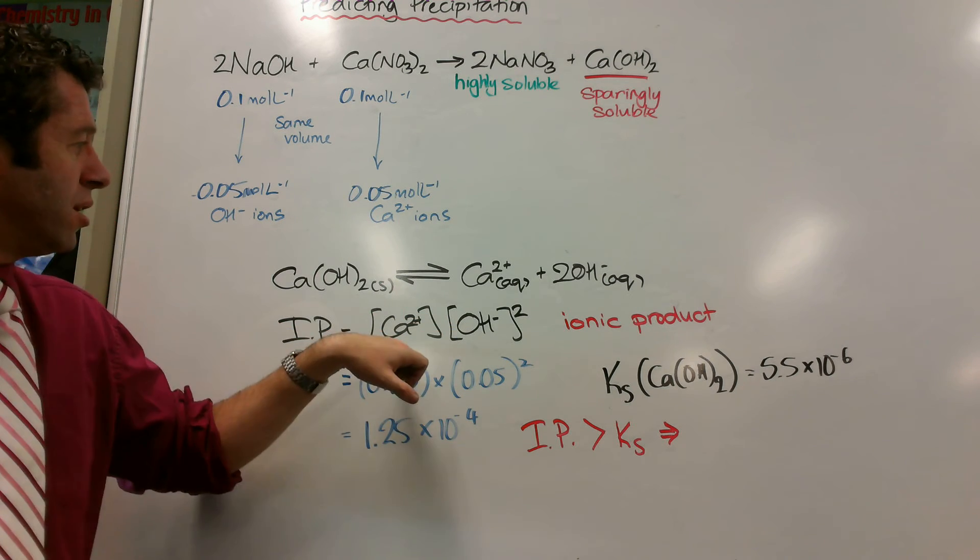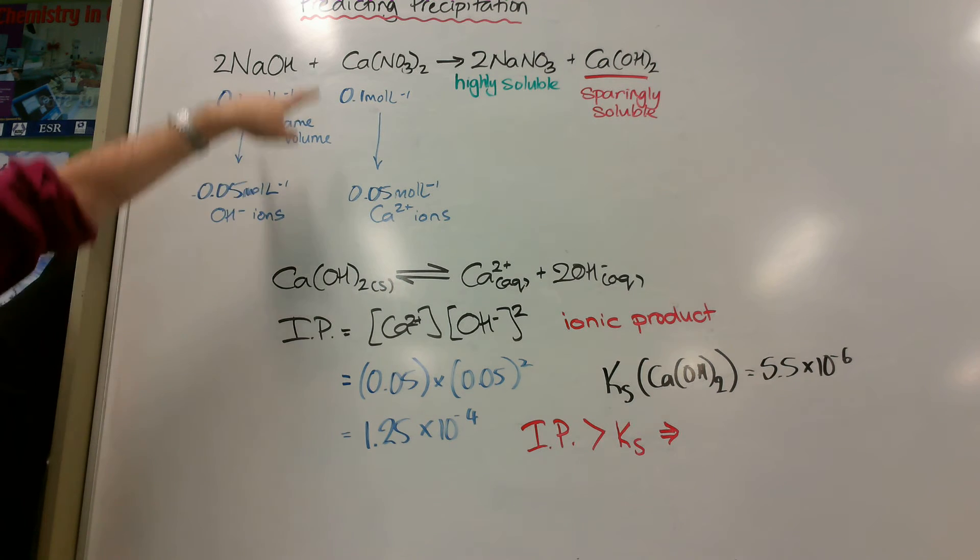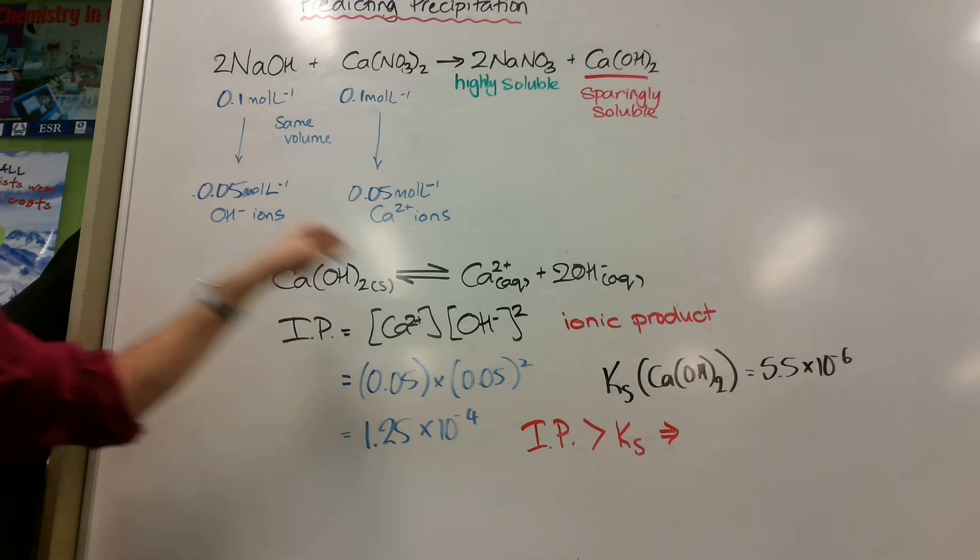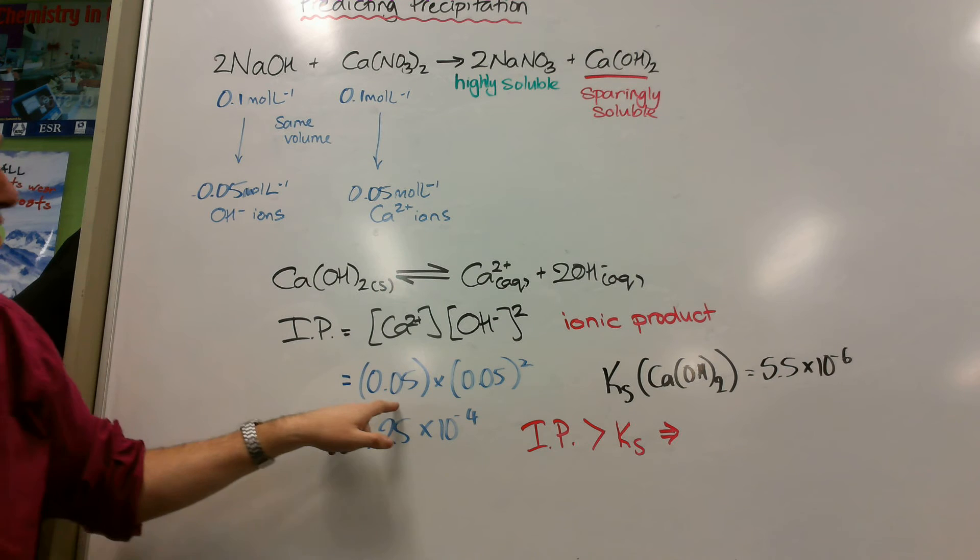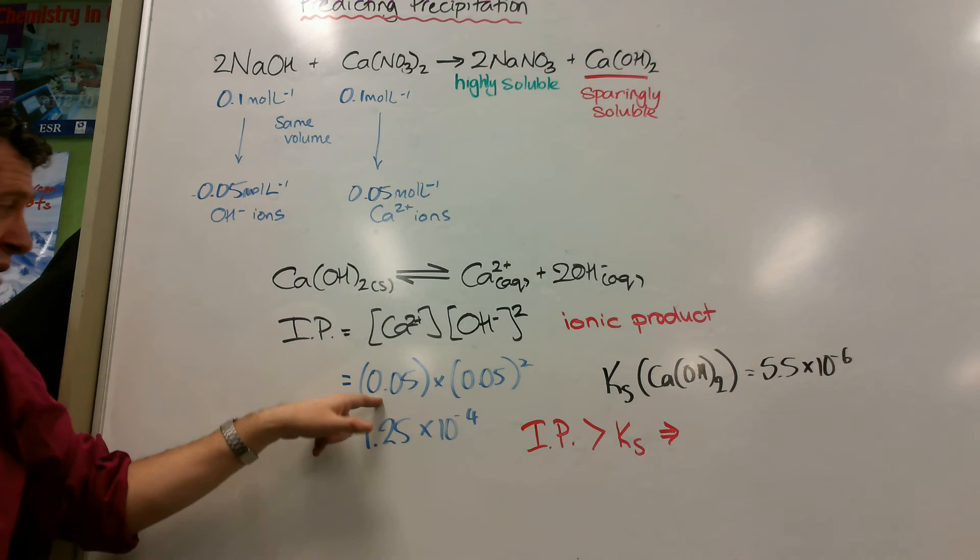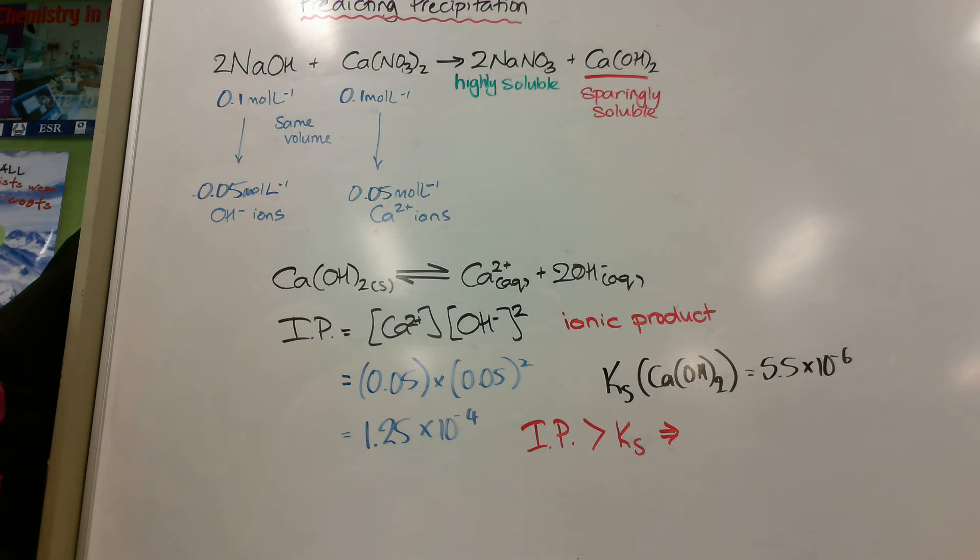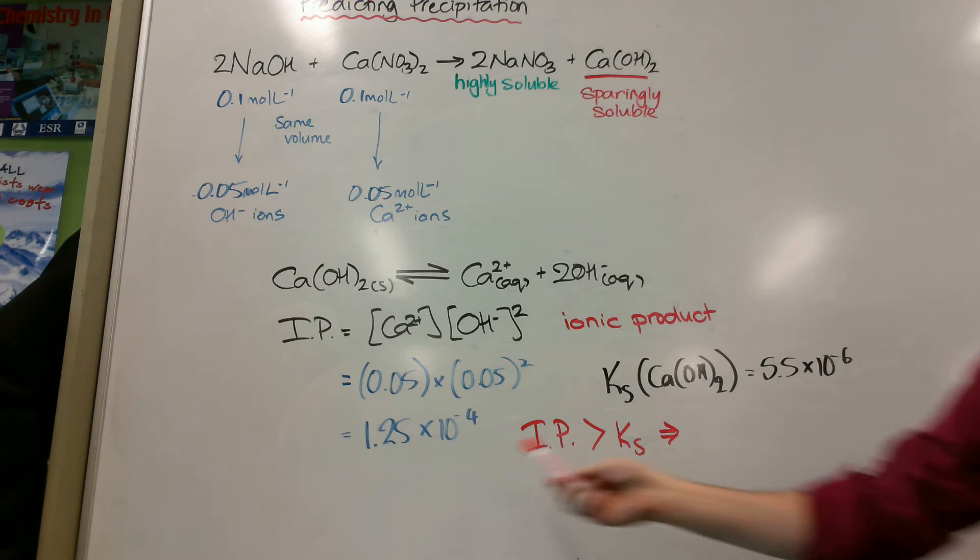So if we know this, we can plug the numbers in that we know from up here, because we know what we started with. We started with 0.05 moles per liter of hydroxide, so I put that number in. I started with 0.05 moles per liter of calcium ions, so I plug that number into here. So I get 0.05 times 0.05 squared, and I get 1.25 times 10 to the negative 4. No unit required. They do have units, but you can do those at uni. You don't need those for level 3. And what I notice is that my ionic product is bigger than my KS.